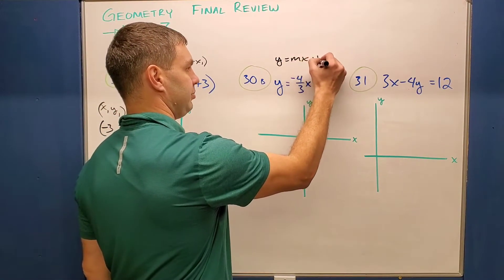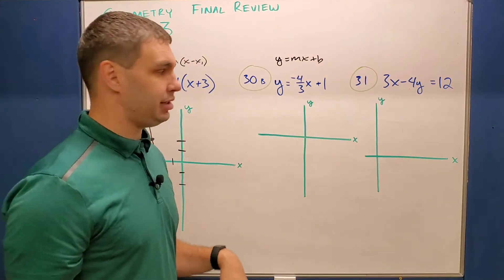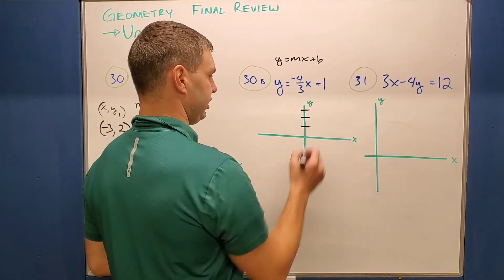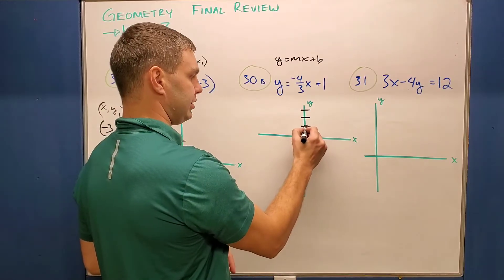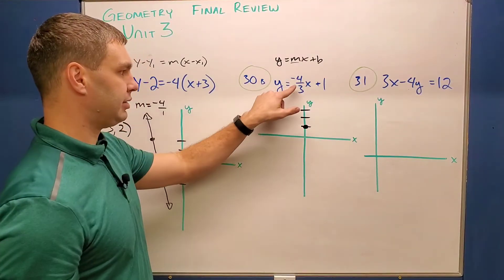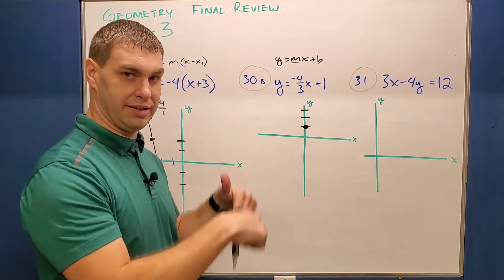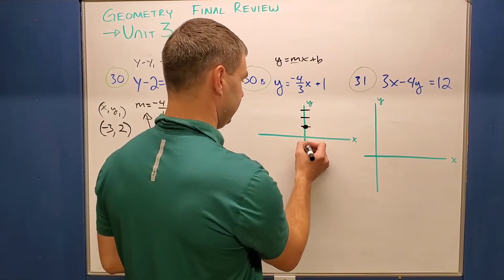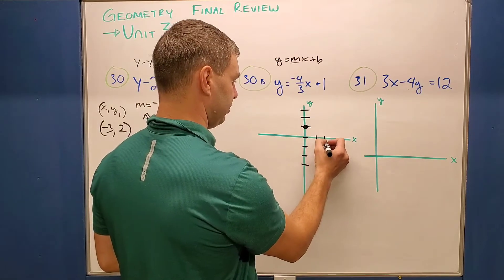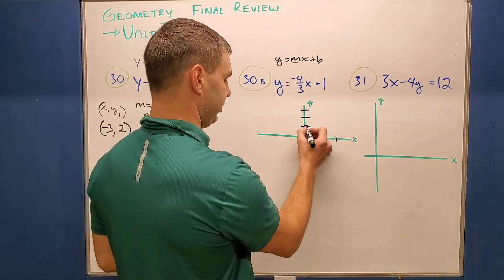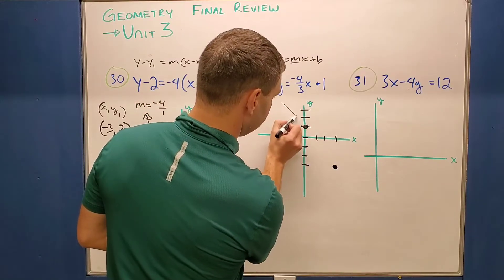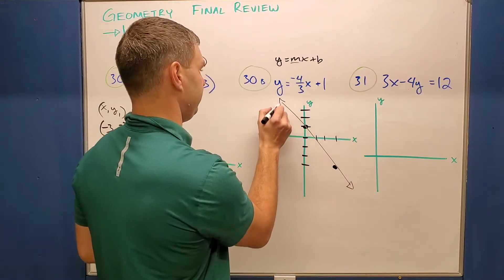The next equation is in slope-intercept form: y equals mx plus b. Here you start at b, the y-intercept, which in this case is 1, so place a dot at (0, 1). Then the slope m is negative 4/3, meaning you go down 4 and right 3 from that dot to plot the next point. Connect those dots to draw your line.